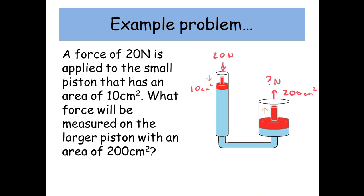So let's have a look at an example problem. A force of 20 newtons is applied to the small piston that has an area of 10 centimeters squared. What force will be measured at the larger piston with an area of 200 centimeters squared? Well, pressure is force divided by area, so 20 divided by 10. So we find that the pressure in the liquid is 2 newtons per centimeter squared.